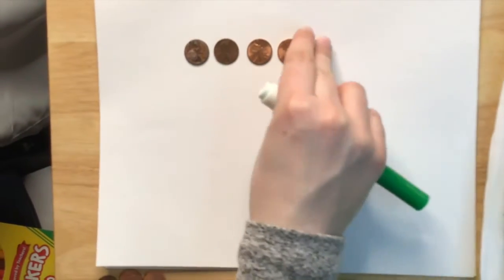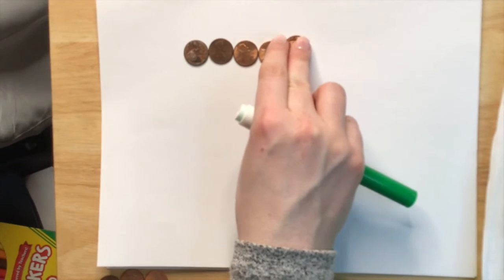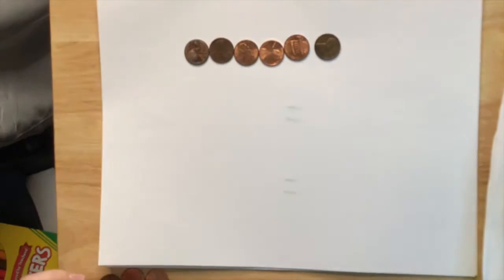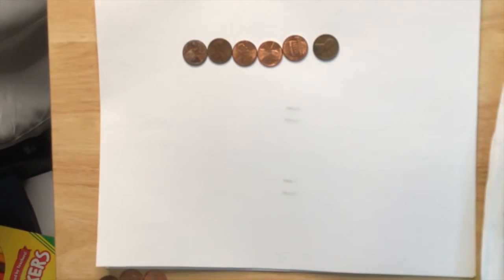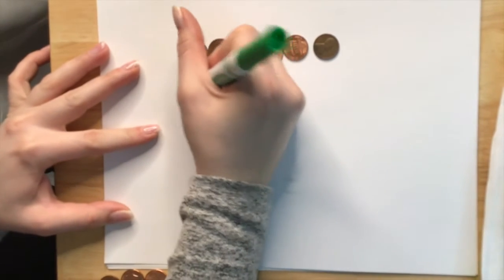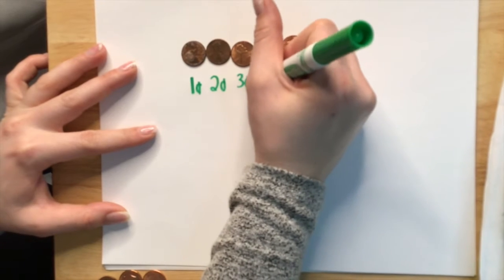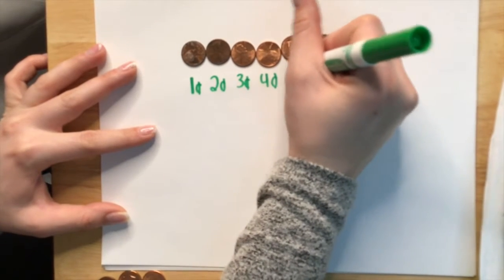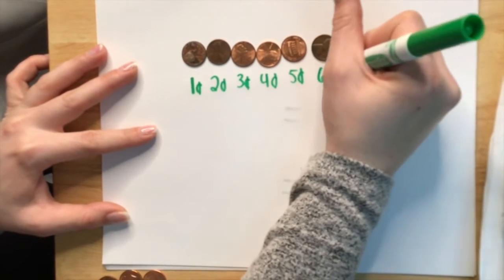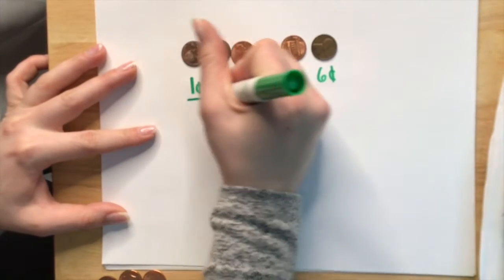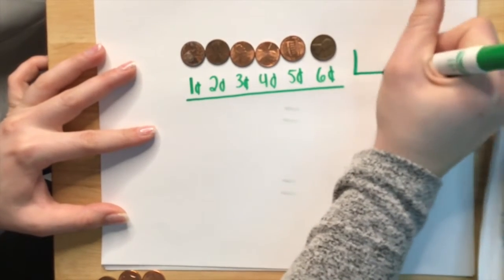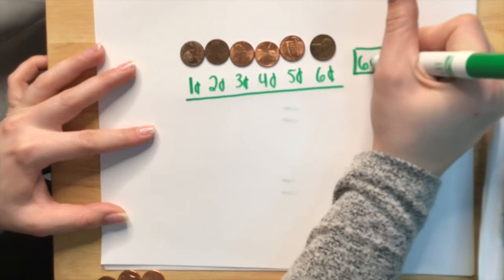the way we would count these pennies is by saying one cent, two cents, three cents, four cents, five cents, six cents. And then we would want to make sure that we write that as a complete total of six cents.